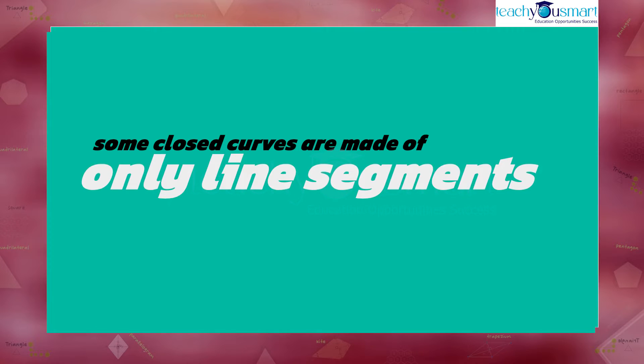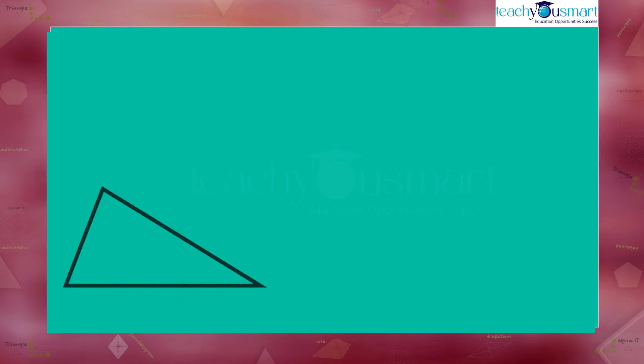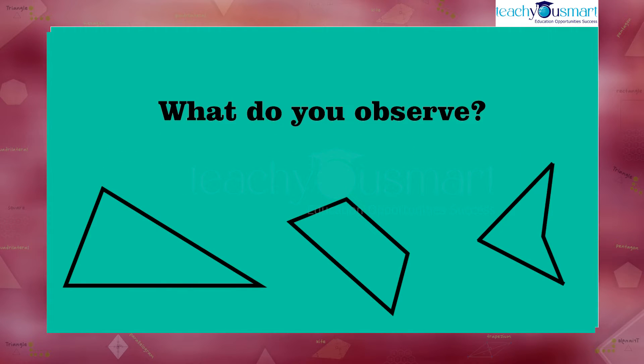Some closed curves are made of only line segments. Let's see how it is. Some shapes are given here. What do you observe from these closed curves?